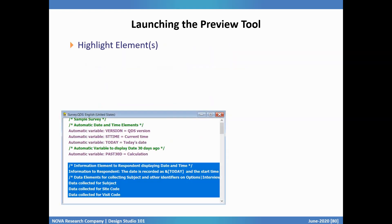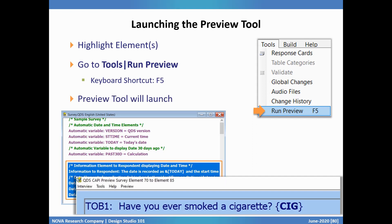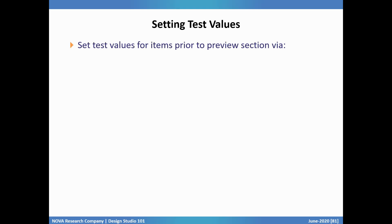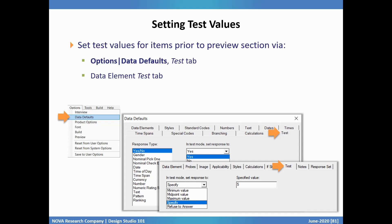With the Preview tool, you can specify test values for earlier data elements, specify an interview date for testing, review entered data during or after preview, and save entered responses in a delimited text file. To launch the Preview tool, first highlight one or more elements, then go to Tools > Run Preview or use the keyboard shortcut F5. The Preview tool will launch onto the first data element or information screen highlighted — you do always need to highlight at least one data or information element. A key advantage to using preview mode is that you can set test values for questions prior to the highlighted section, which streamlines testing. To set test options, go to Options > Data Default > Test tab, where you can set all data elements with a certain response type to a single value — such as setting all Yes/No type items to No.